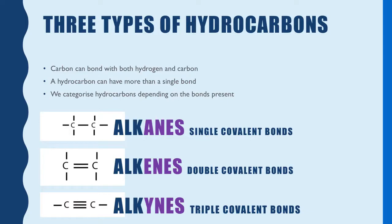There are 3 different types of hydrocarbons. Carbon can bond not only with hydrogen, but with another carbon and another one — and they don't always have to be single bonds; they can be double or triple. Depending on the bonds that are present is how we categorize them. If there are only single covalent bonds between the carbons, we classify these as alkanes. If there is at least one double bond in the whole structure, we classify this as an alkene. And if there is at least one triple bond in the whole structure, we classify that structure as an alkyne.